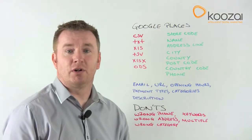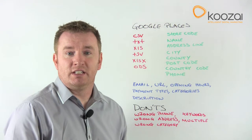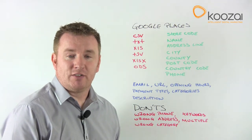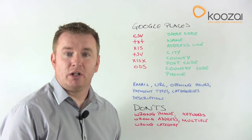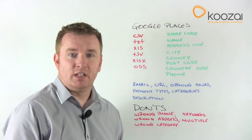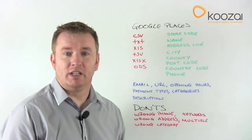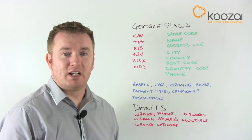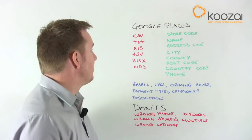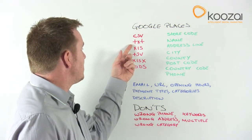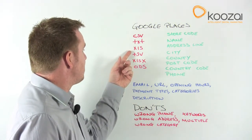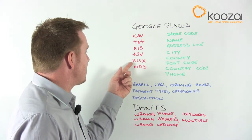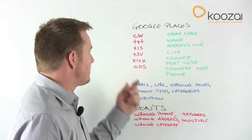First, you need to look into your Google Places profile — this is done with your Google account. You're then given the option to upload a data feed, which should be done with a spreadsheet. This can be saved in various formats, including .csv, .txt, .xls, .tsv, .xlsx, and ODS.